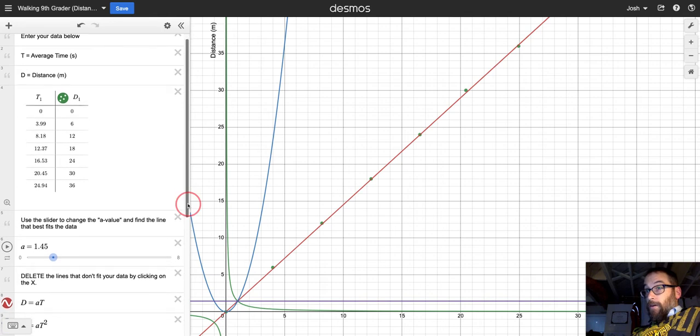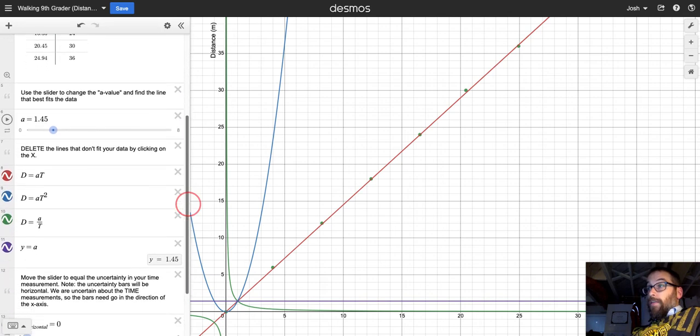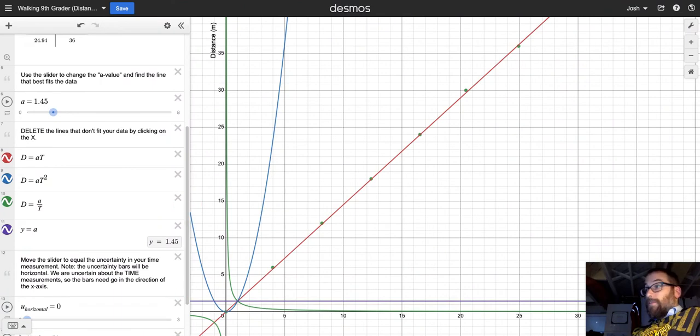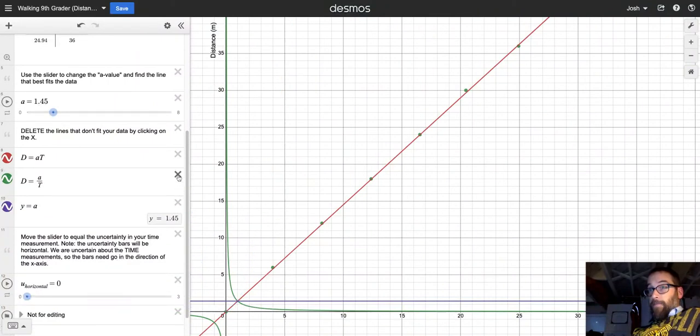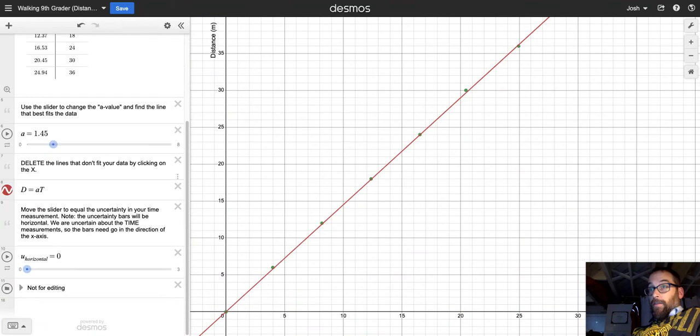If we scroll down in that left column, we'll see that each of those lines corresponds to a specific equation describing the mathematical relationship between the variables. You can see that those equations are also color-coded to match the lines. In the red equation right here, D is equal to some number A—that's the A value—multiplied by T. That equation goes with our data. That means we can get rid of the other lines and equations, the blue, green, and purple, by clicking the X to the right, leaving just the line that fits our data.